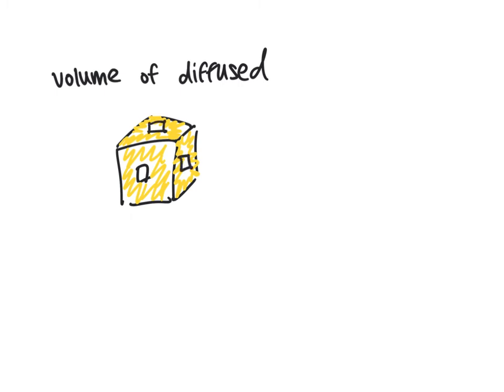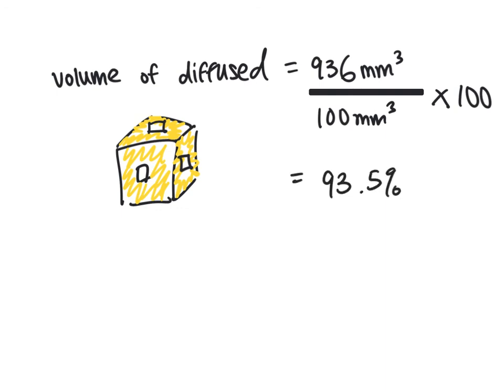So the volume of the diffused is 936. I'm going to divide that by the entire volume, which is 1,000 millimeters cubed. Multiply that by 100. I'm going to get 93.5. So the vinegar diffused 93.5% of the entire cube.